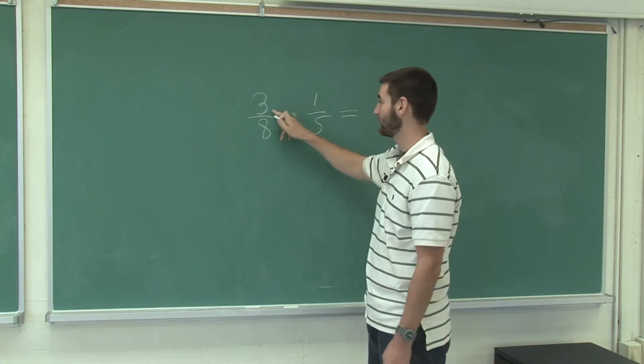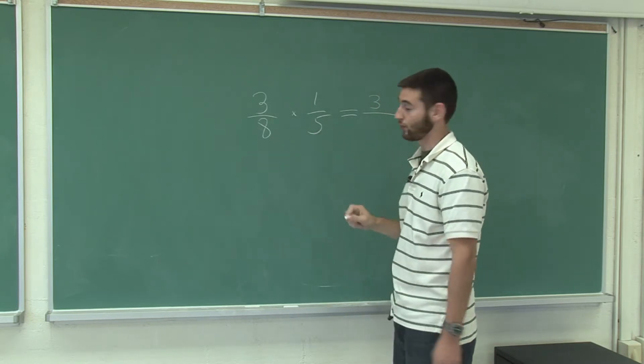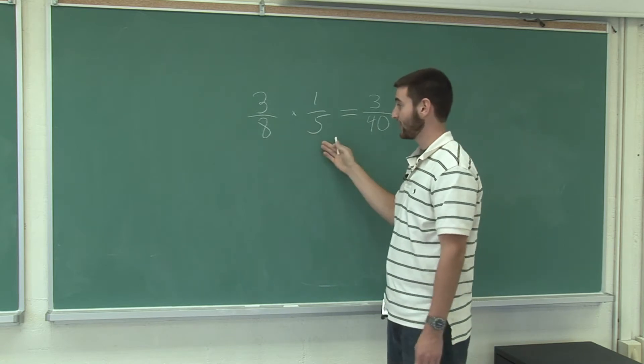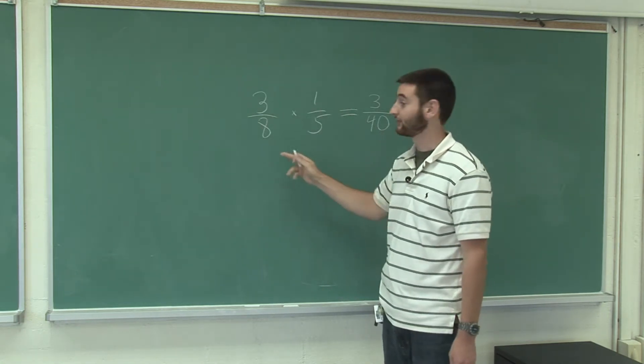In this case, it's going to be three times one is three, eight times five is forty. The product of two fractions is just the product of their numerators divided by the product of their denominators.